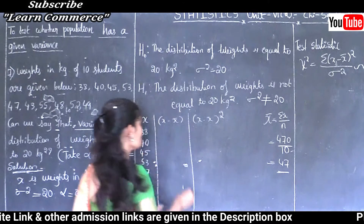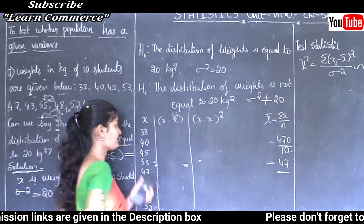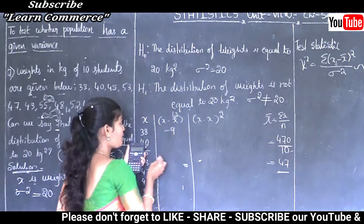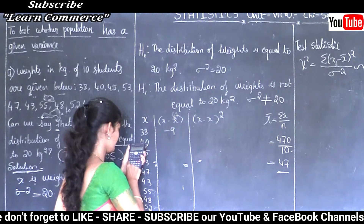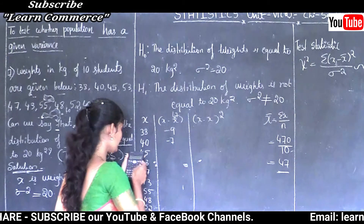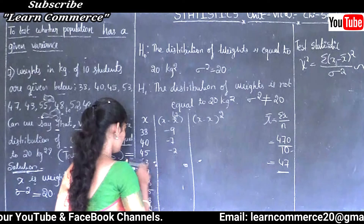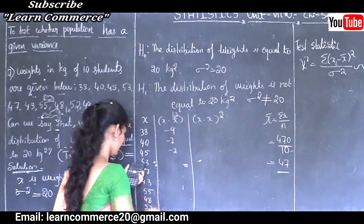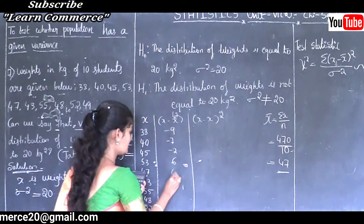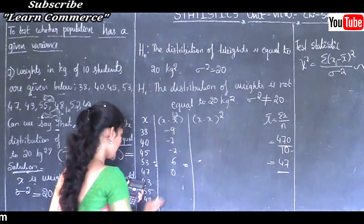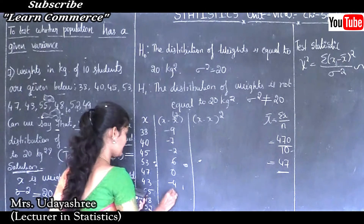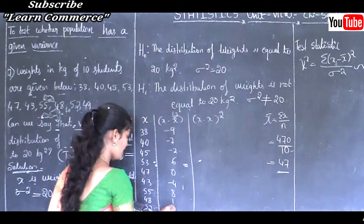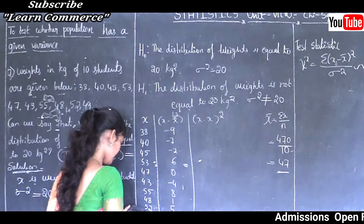With x̄ = 47, computing x minus x̄ for each observation: 38−47 = −9, 40−47 = −7, 45−47 = −2, 53−47 = 6, 47−47 = 0, 43−47 = −4, 55−47 = 8, 48−47 = 1, 52−47 = 5, 49−47 = 2.